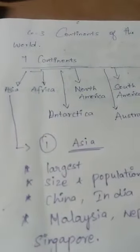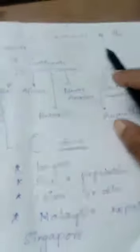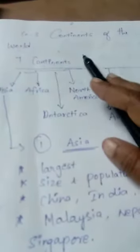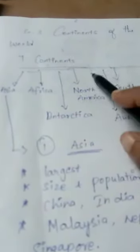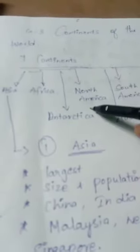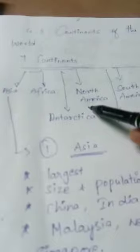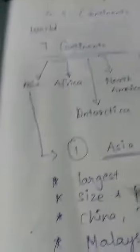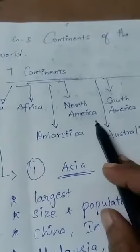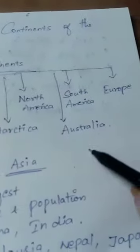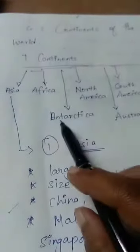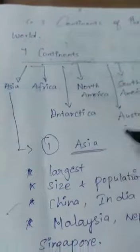Okay, in today's class we are going to see Lesson Number Three: Continents of the World. In the previous standard we also saw this topic, so I hope you already know the seven continent names. I am repeating them again in this lesson. Totally there are seven continents on Earth: Asia, Africa, North America, Antarctica, South America, Australia, and Europe.